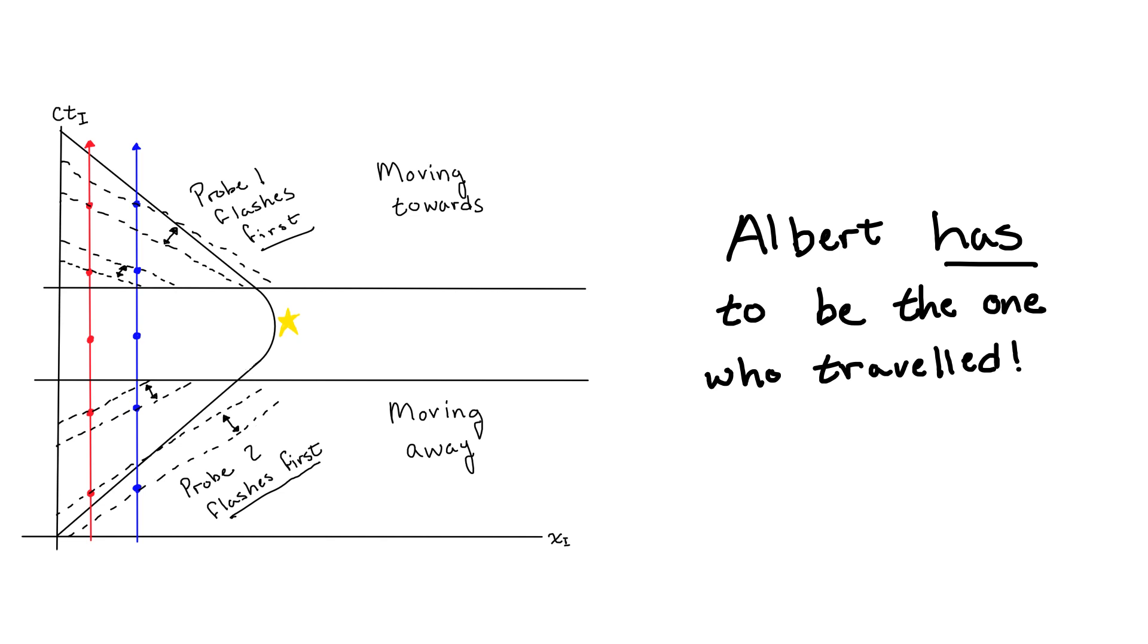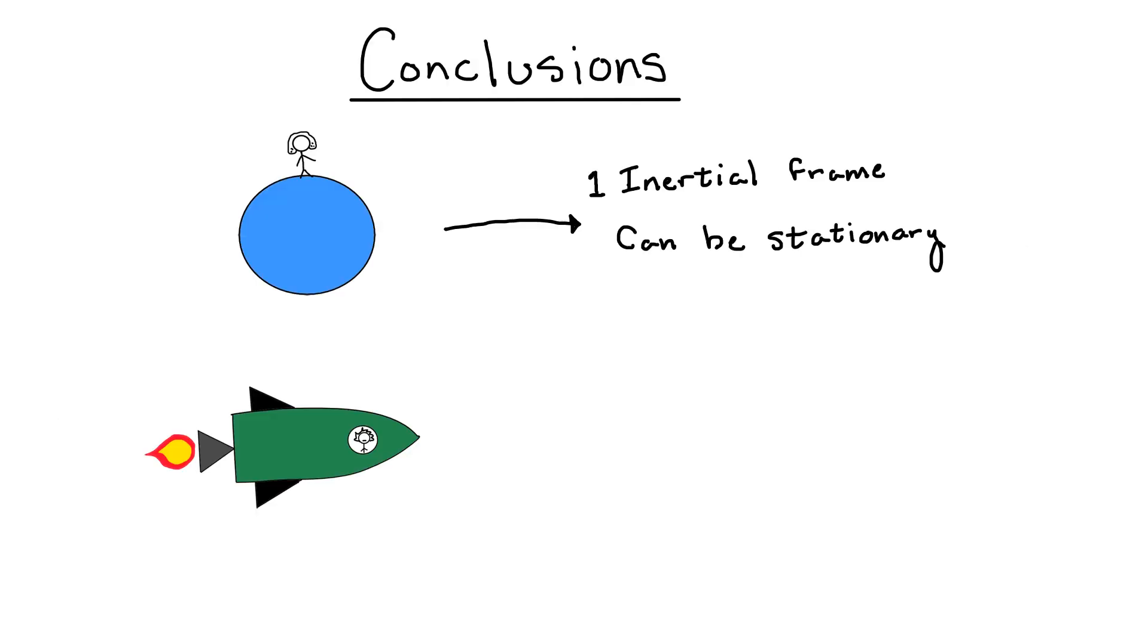Now let's say this a bit more formally. Since we can choose a frame where Isaac does not move for all time, we know that Isaac is in an inertial frame, or a frame moving at a constant velocity.